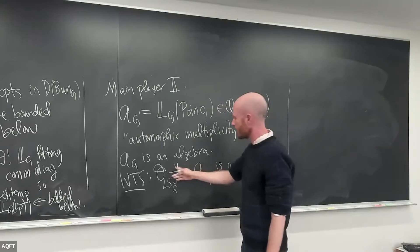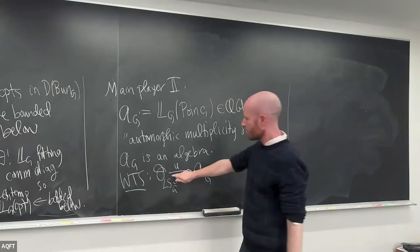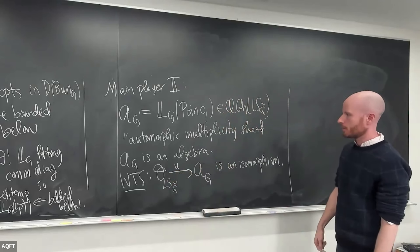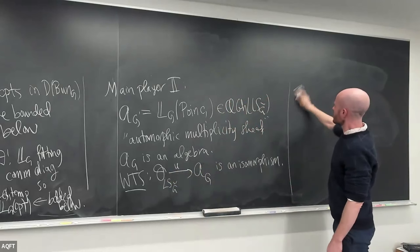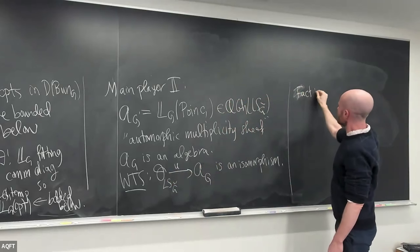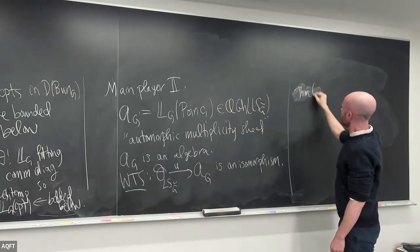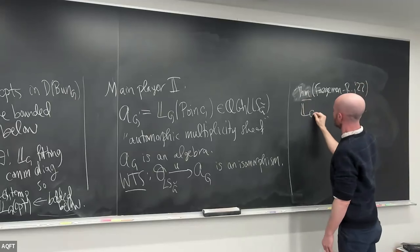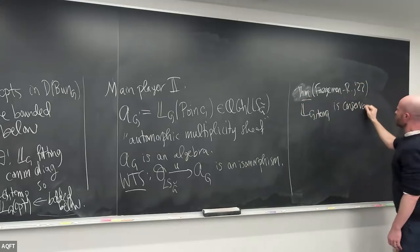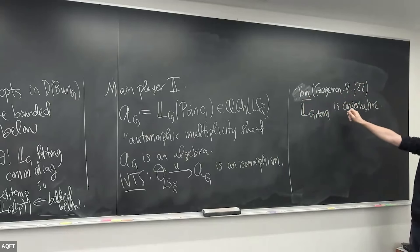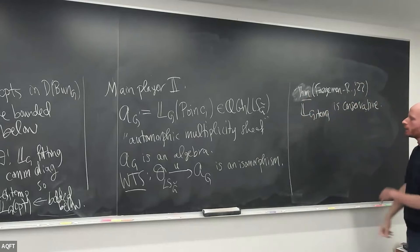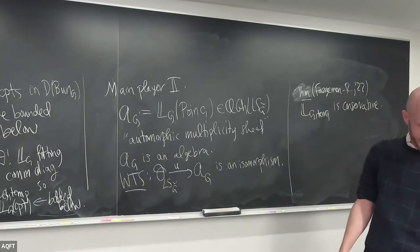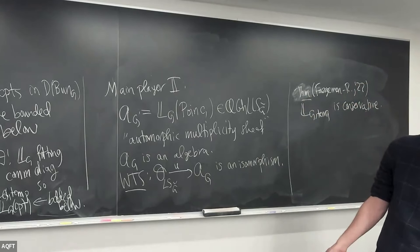This tempered geometric Langlands is directly equivalent to the statement that this unit map is an isomorphism. There's a theorem of 2022 that this functor LG-temp is conservative. This means that if you have an object of the tempered quotient and you apply this functor to it and get zero, then your object was zero. It's different from what happens in arithmetic. The proof is very interesting, but this does not apply to morphisms.